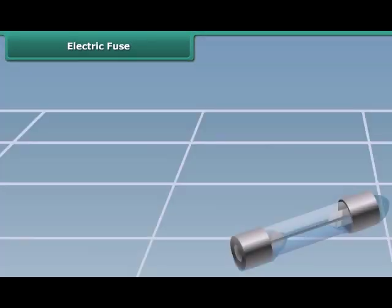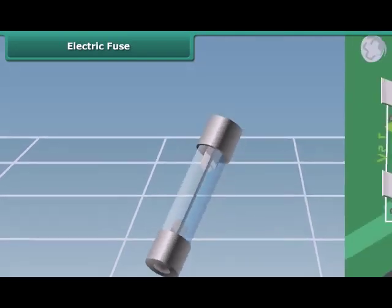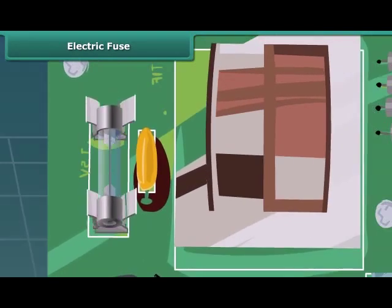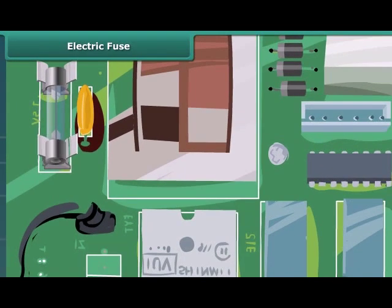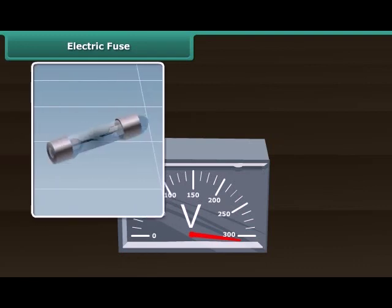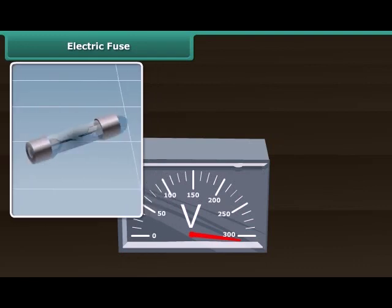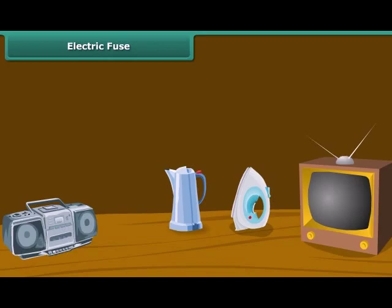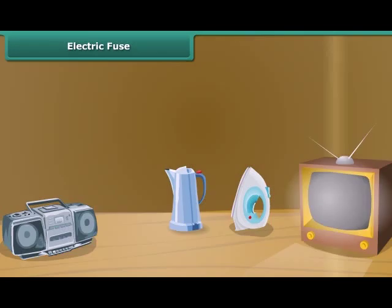A safety fuse is a device that protects an electric circuit. The heating effect of electricity is used in this case. When the current drawn is beyond a certain value, the fuse wire gets overheated, melts, and breaks the circuit. This prevents fire and damage to various electrical appliances.